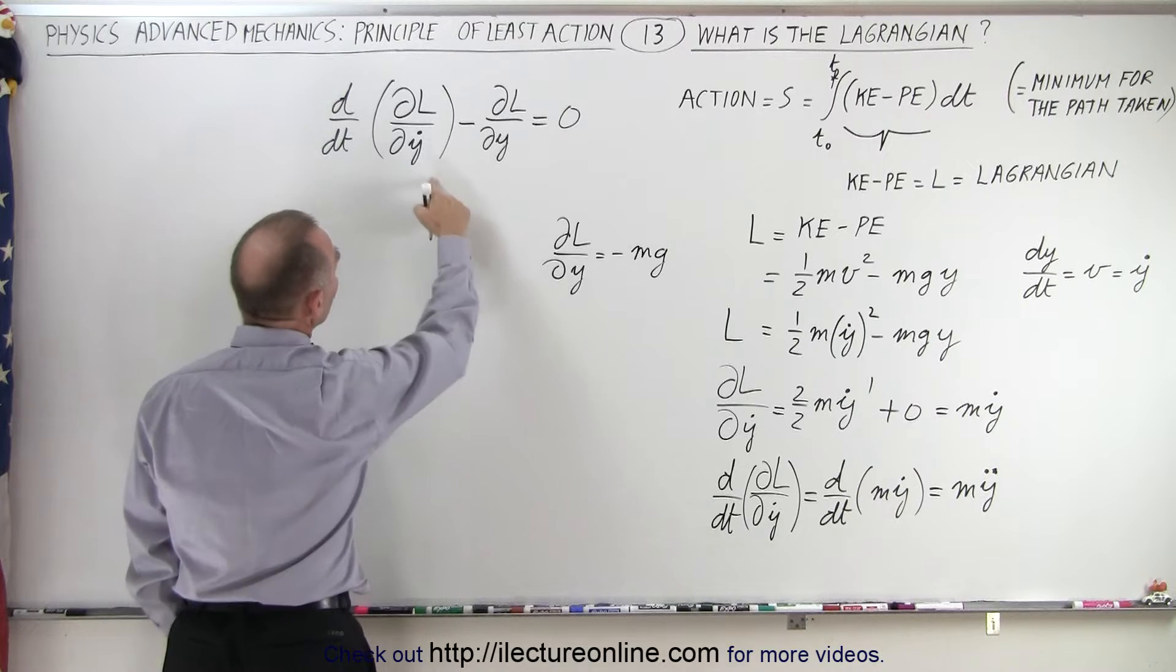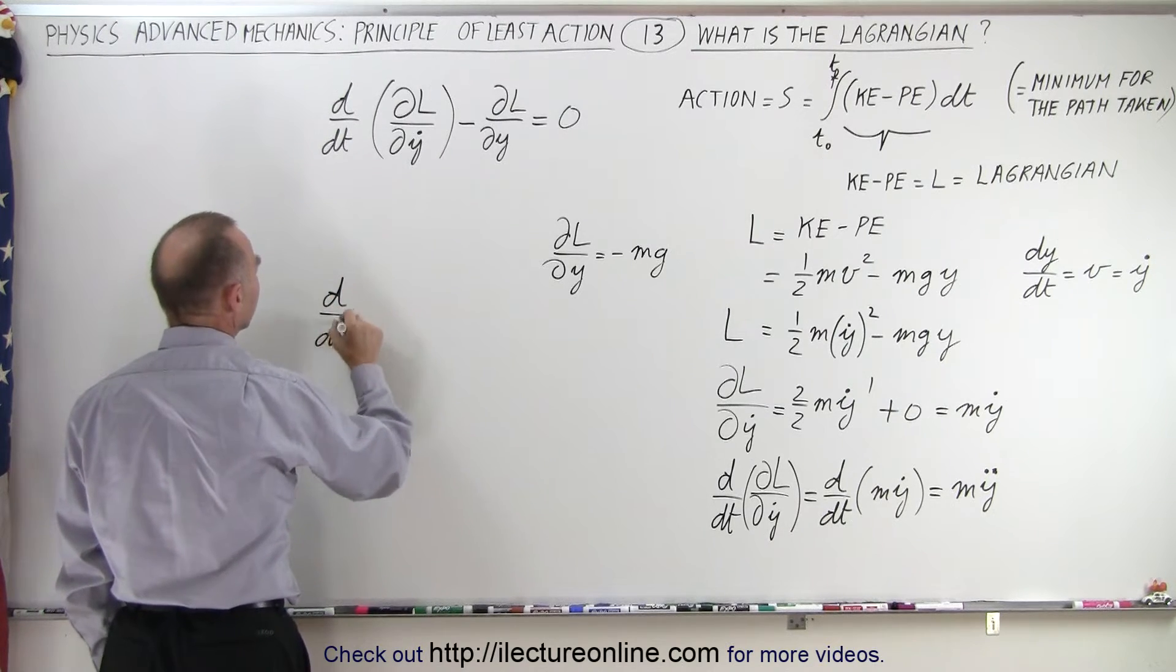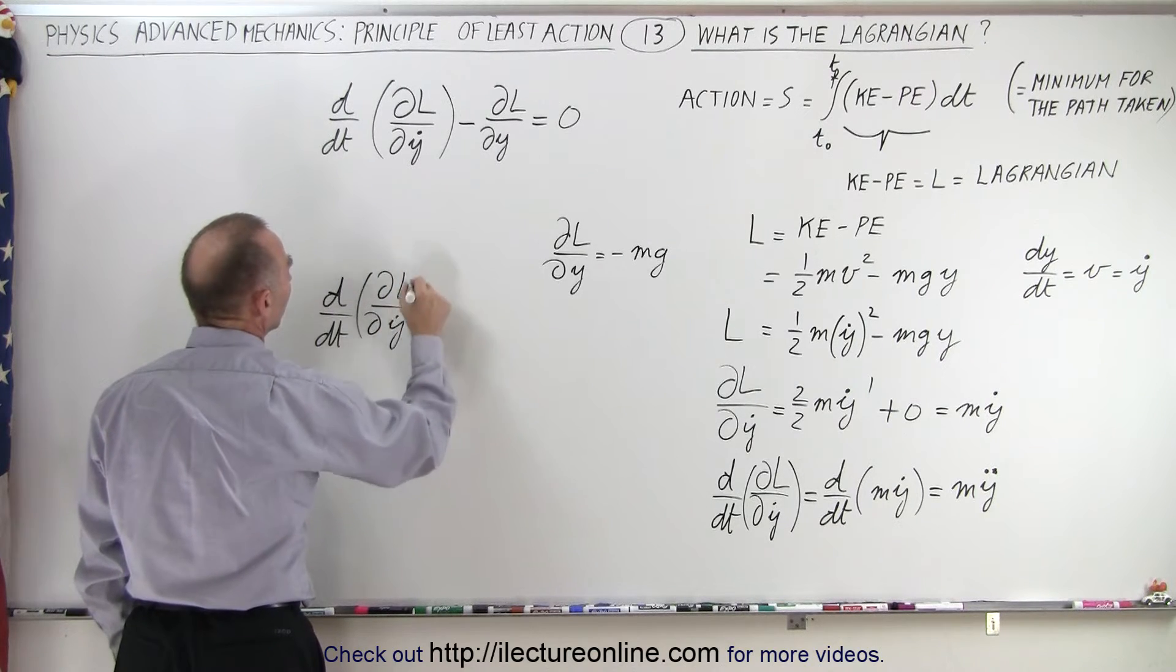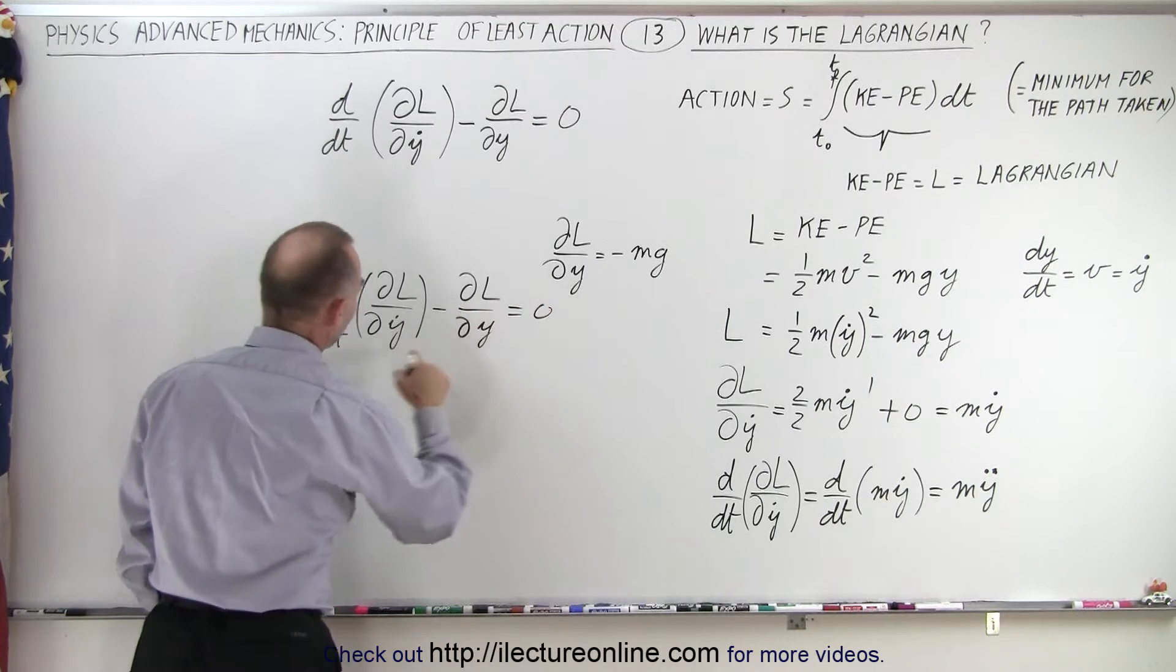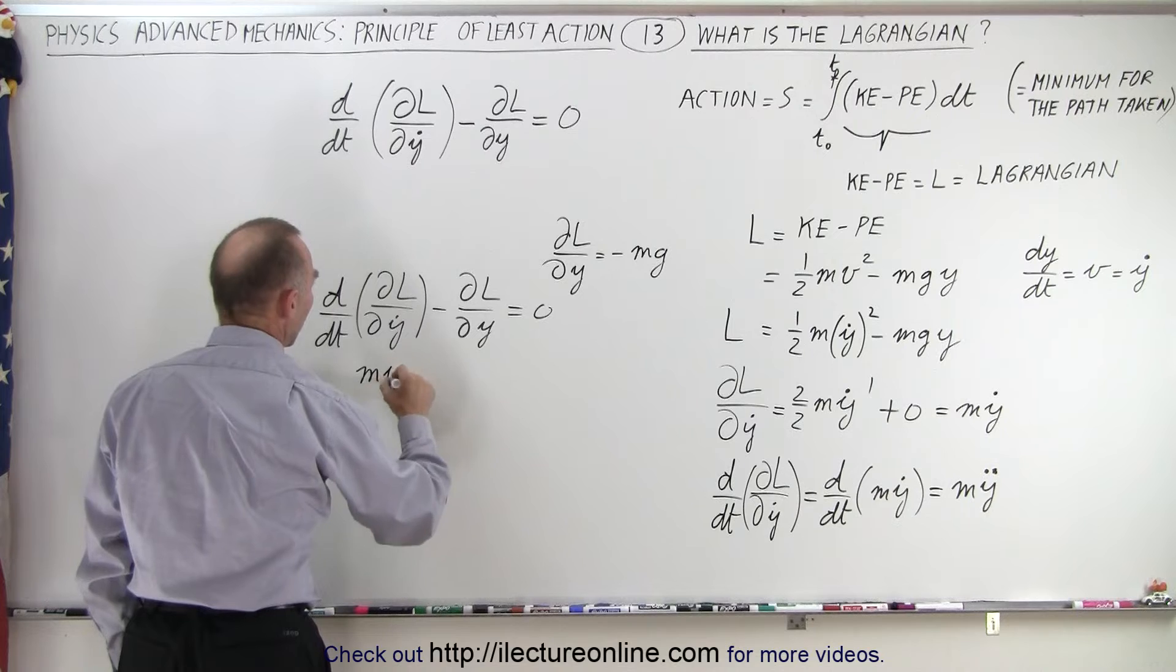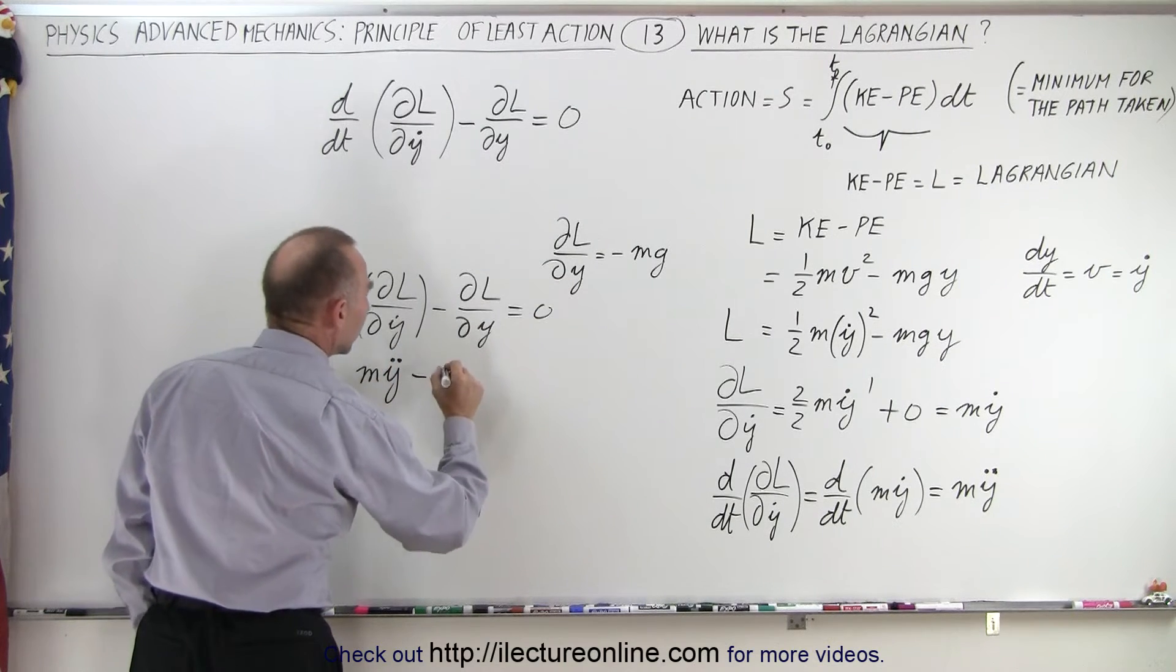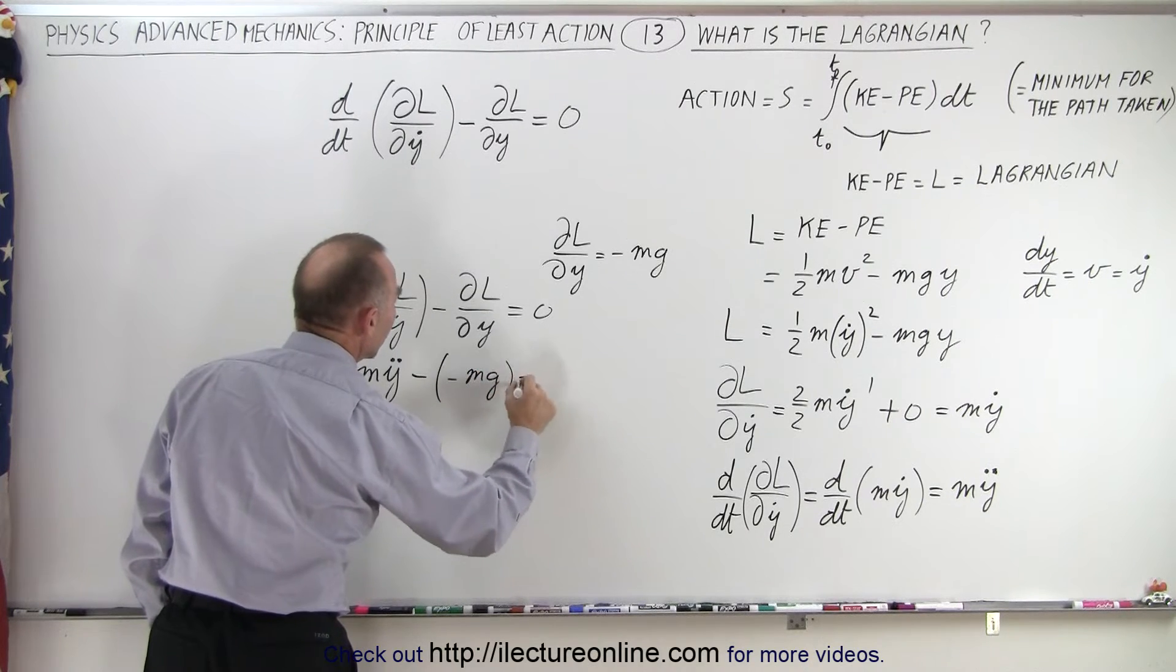Okay, so now let's plug that in here and see what we get. So now we have the d dt of the partial of L with respect to y dot, minus the partial of L with respect to y equals zero, and this component was equal to m y double dot, m y double dot, minus, minus a minus mg, equals zero.